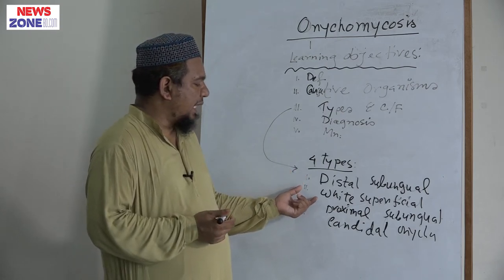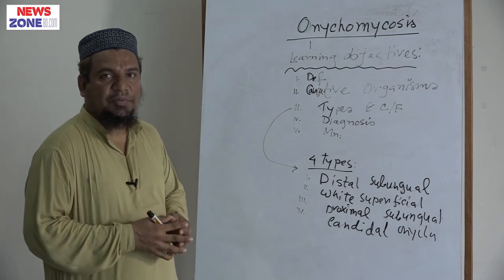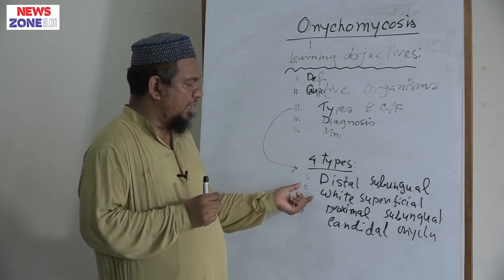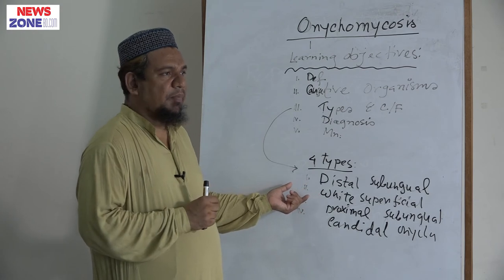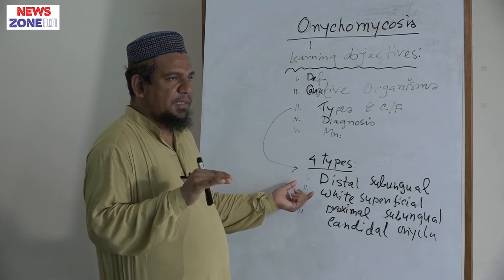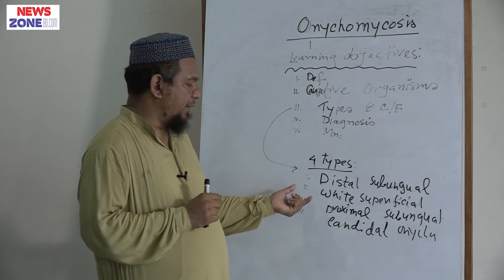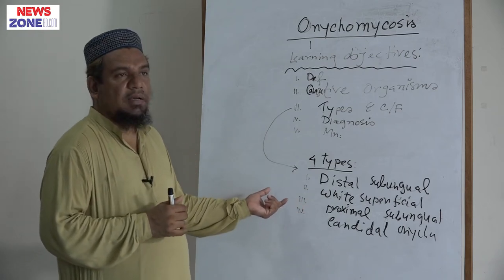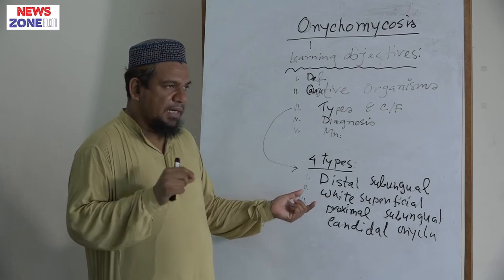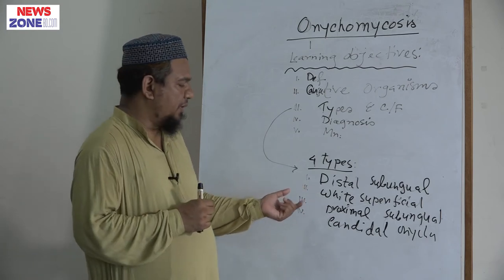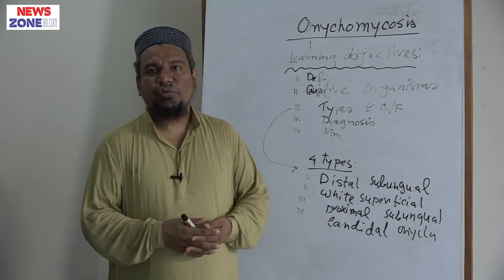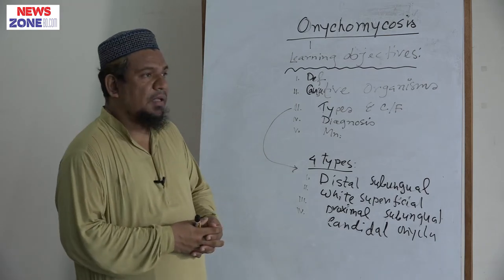The second type is white superficial onychomycosis. In this type, there are white patches within the nail plate and there may be creamy discoloration. It produces white or chalky markings on the surface of the nail plate. Proximal subungual onychomycosis involves the nail fold and spreads to the nail plate later on. The last one is candidal onychomycosis, caused by Candida infection, which produces whitish hyperkeratosis of the nail plate.